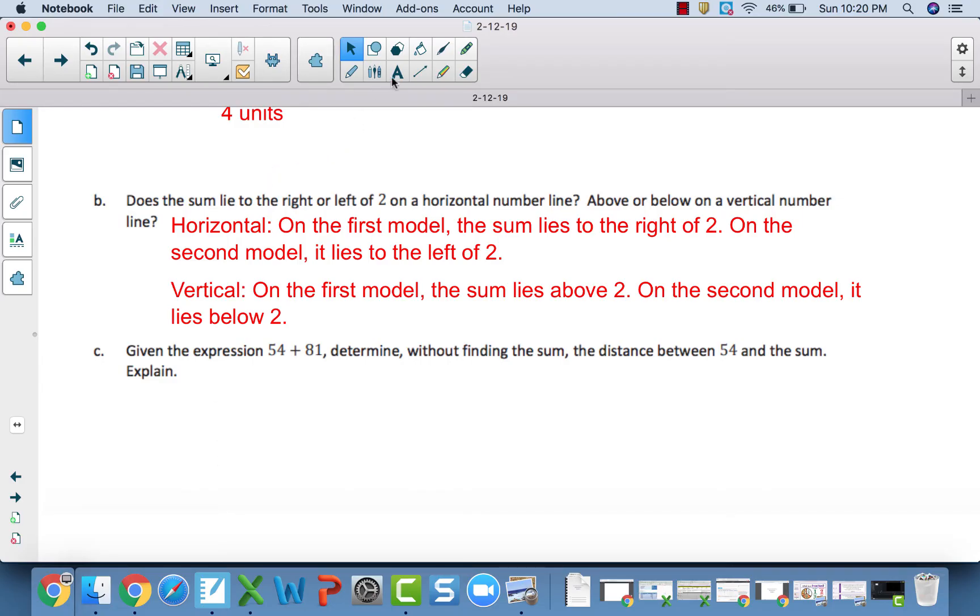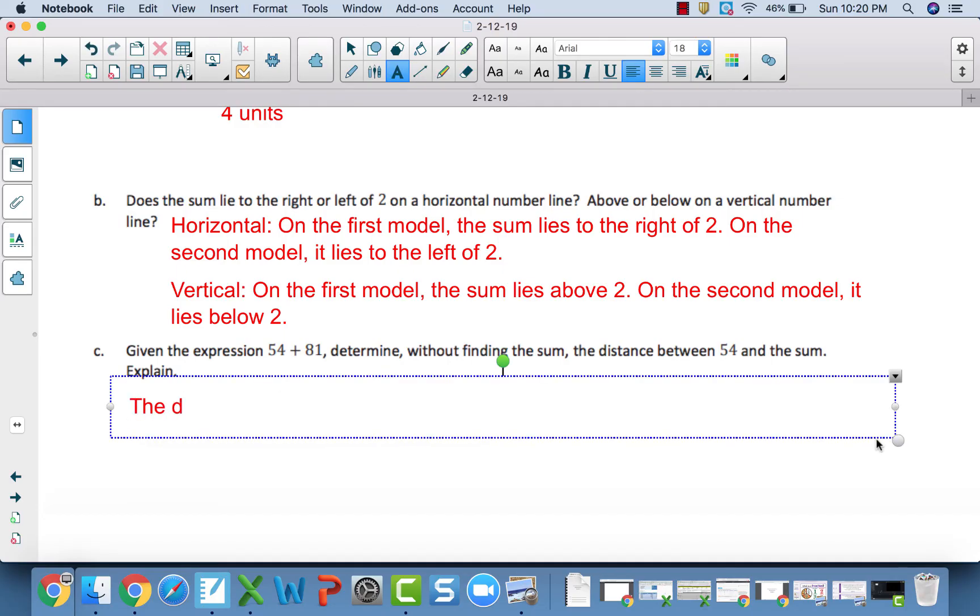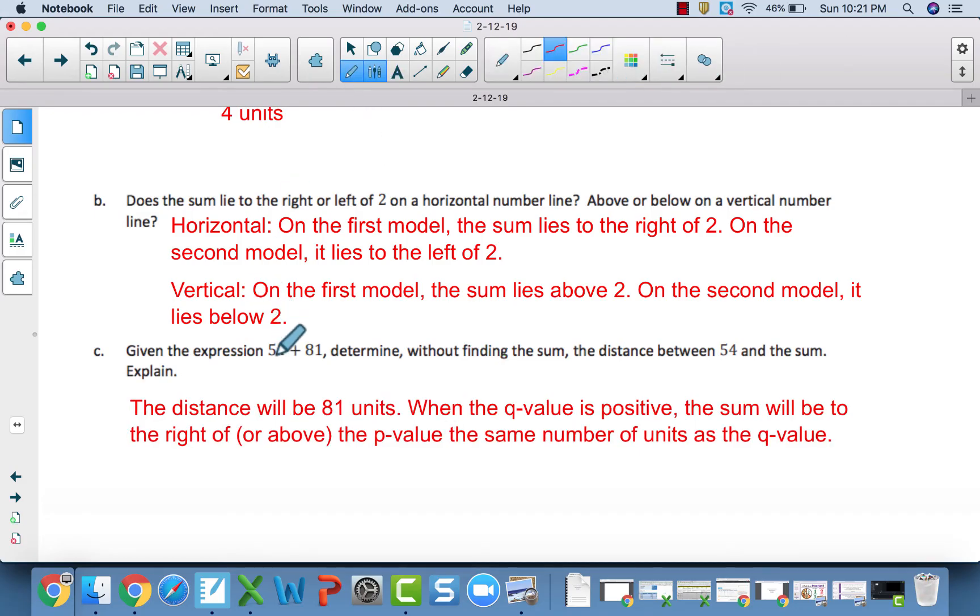So the distance will be 81 units. When the Q value, which is our second number, is positive, the sum will be to the right of or above, if it's on a vertical number line, the P value, the same number of units as the Q value. So just to be clear with what I'm talking about, this first integer is going to be represented by P, and this second integer is going to be represented by Q. We can obviously substitute real integers in there to model a situation, but in general, that first number, we're going to use the variable P, and the second number, we are going to use the variable Q.